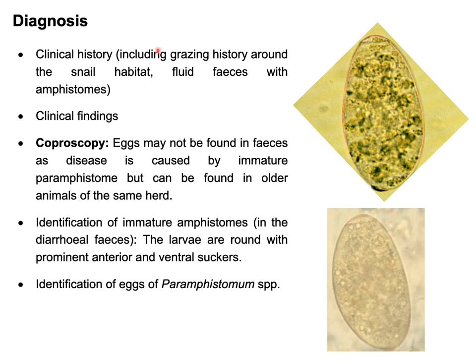Diagnosis of Paramphystomosis or Amphistomosis: to diagnose this disease, check the clinical history including grazing history around snail habitats, and look for fluid feces containing amphistomes. Also check clinical findings as discussed. Finally, perform fecal examination — both gross examination, where you may see immature flukes passed through feces identifiable by their oral and ventral suckers in red or brownish-pink color, and microscopic examination to identify the eggs of Paramphystomum species.